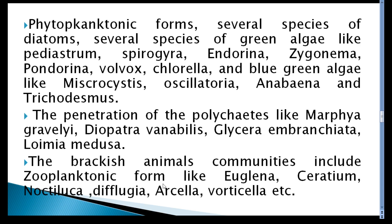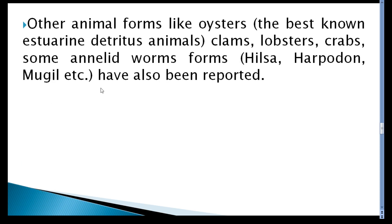Zooplanktonic forms include Euglena, Ceratium, Noctiluca, Difflugia, Arcella, and Vorticella. Other living forms include oysters, detritus, crabs, lobsters, and mullet (Mugil), as well as forms like Hilsa and Harpodon.